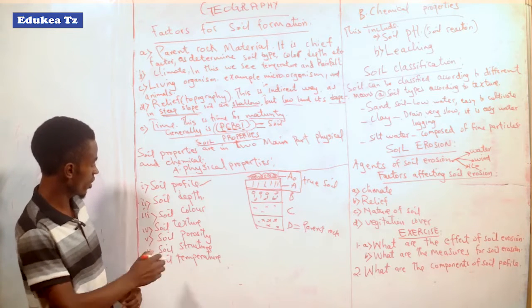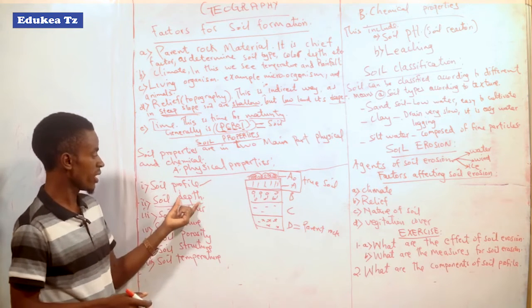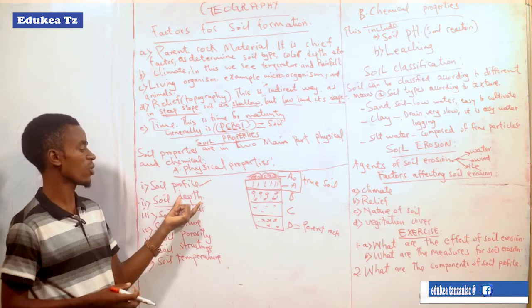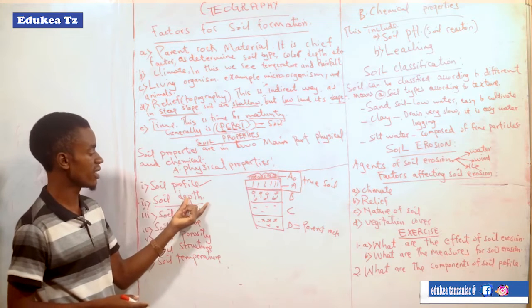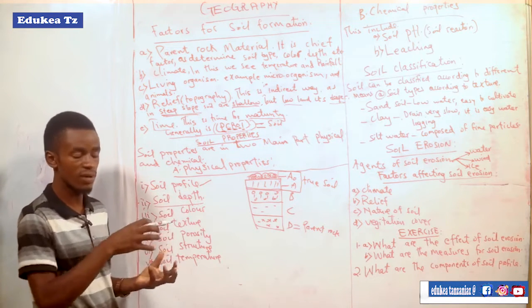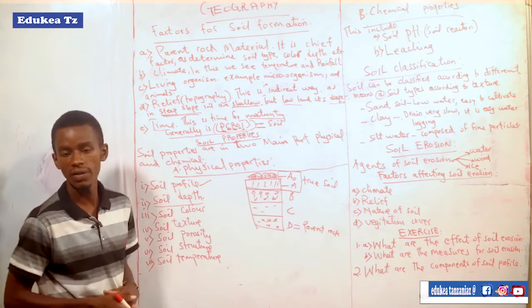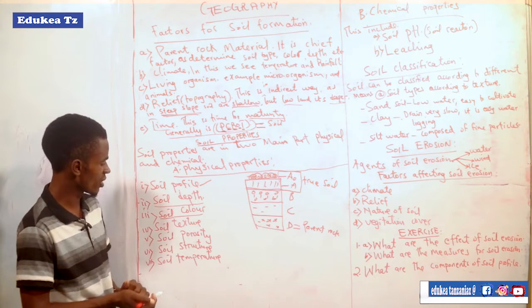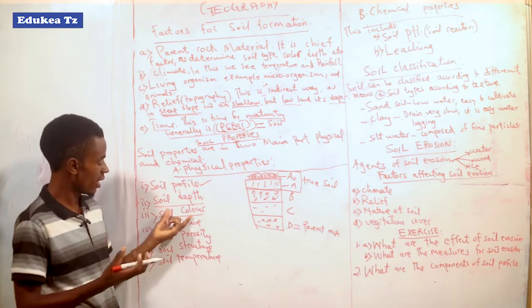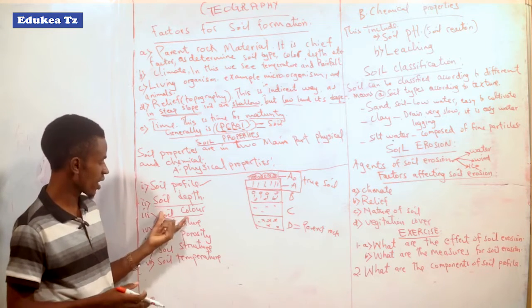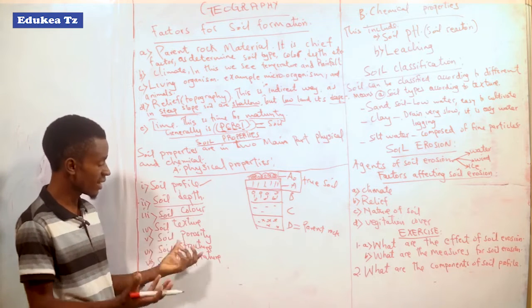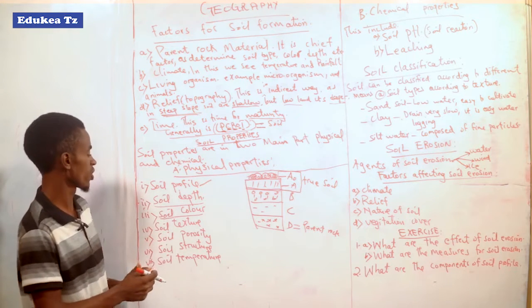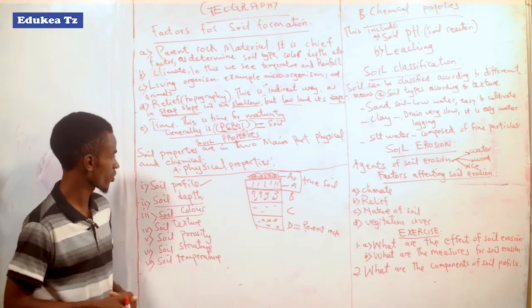The second property of the soil is soil depth. Soil depth is the degree of shallowness and deepness of the soil. There is soil which is deep and there is soil which is shallow. Also there is soil color. Soil color means that the soil differs in color — other soils have a dark color, other soils have a gray color, and others have a red color. There are different types of soil color.